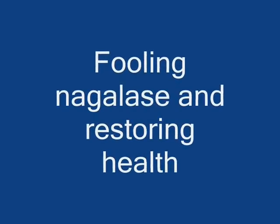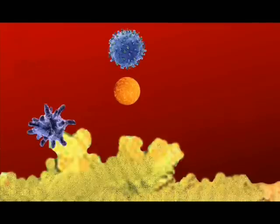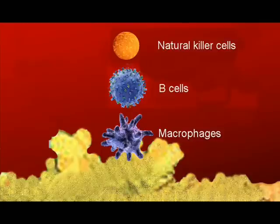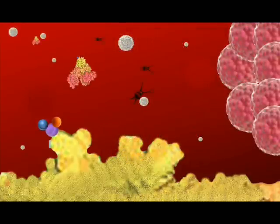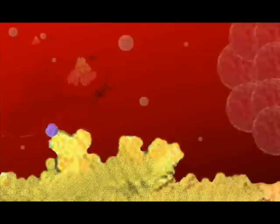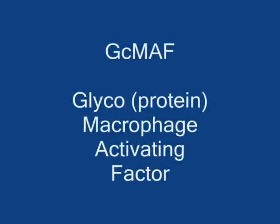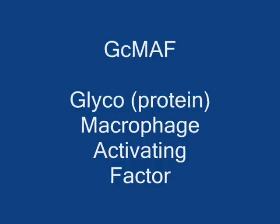Fooling Nagelase and restoring health. Let's look again at immune cell activation. Three different types of plasma cells upregulate to natural killer cells, B cells and macrophages. Nagelase locks onto and cuts the three sugars from the vitamin D transport protein, which then float off into the cellular soup to be recycled eventually. What Dr. Yamamoto discovered next could and should have earned him worldwide recognition. Nagelase only attacked when three sugars were present. In his laboratory, using his own enzymes, he cleaved two of the three sugars off the protein, leaving the remaining sugar that activated plasma cells into macrophages. Dr. Yamamoto called his discovery GCMAF — glyco-macrophage activating factor.